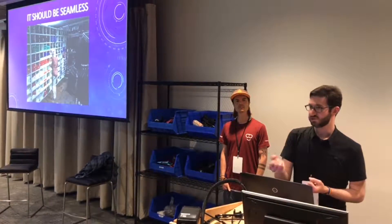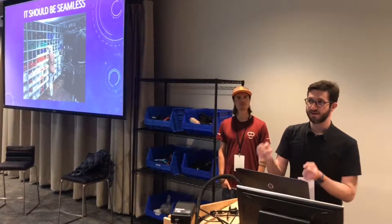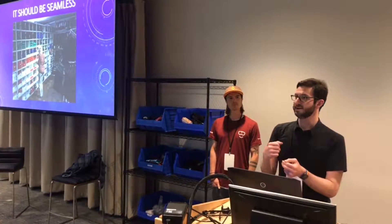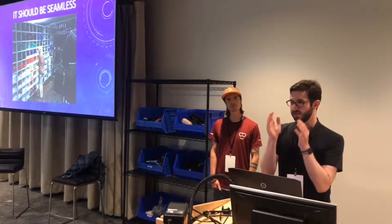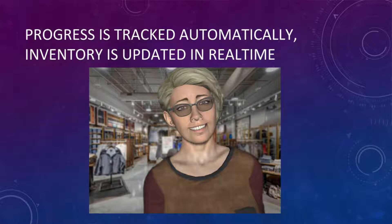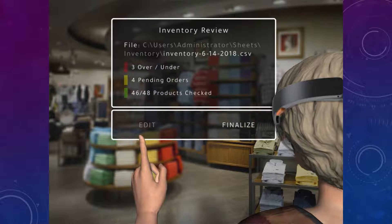You can say 'change count to whatever' and you don't have to search and find that particular row in the spreadsheet — the system knows which product you're talking about and just changes it for you. Progress can be tracked automatically, inventory updated in real time, and at the end you can review what you've done and output an entirely new inventory list.